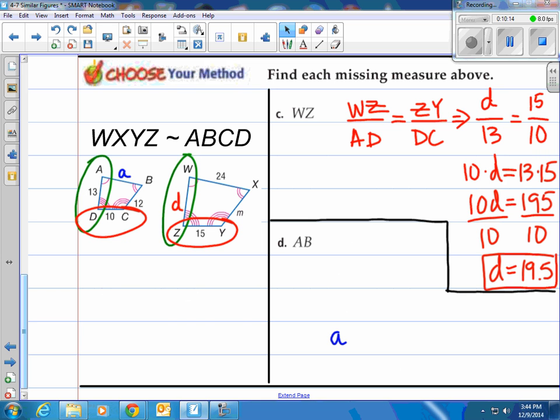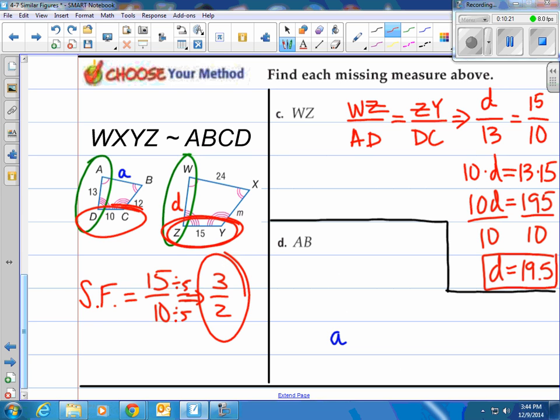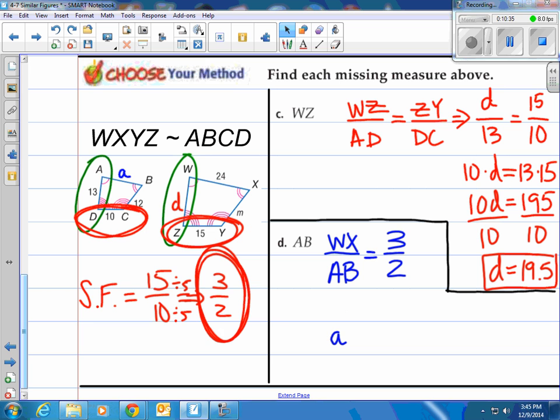The second one, let's use the scale factor. The scale factor, again, if we use our ZY and our DC, we see that it's 15 to 10. So our 15 to 10, which is actually reduced to 3 over 2, is our scale factor. So WX over AB, and we're looking for AB. We match it up with our WX.